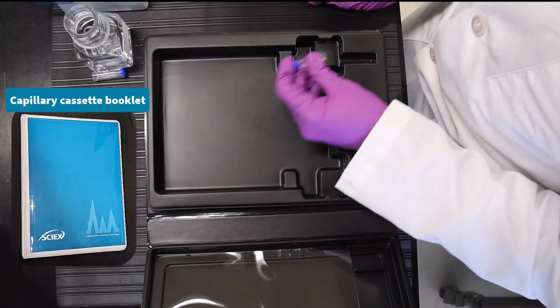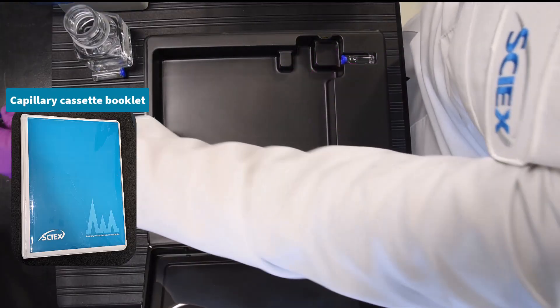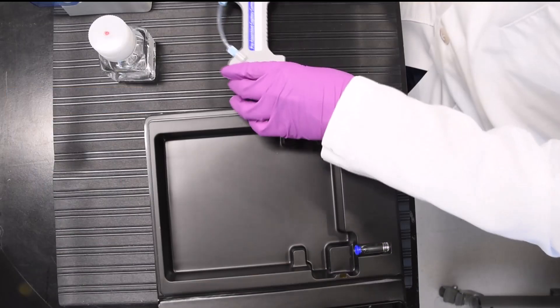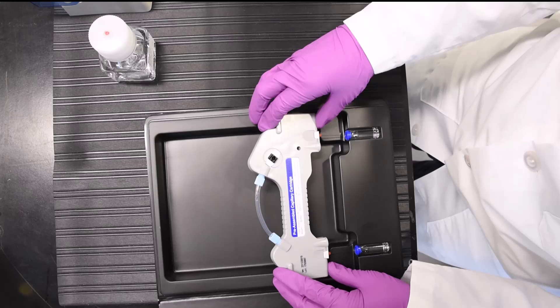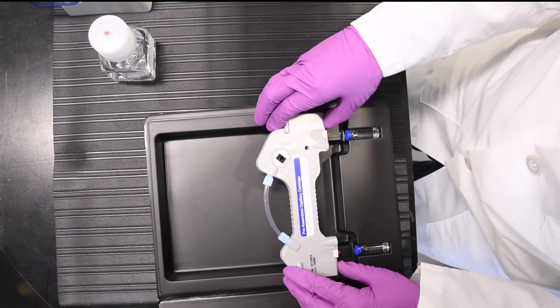Then, place them into the base of the capillary cassette booklet. Next, carefully insert the capillary cartridge assembly face up into the grooves of the cassette booklet.